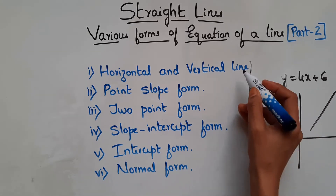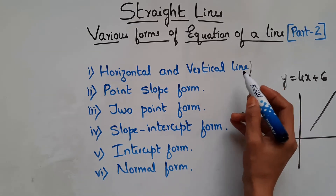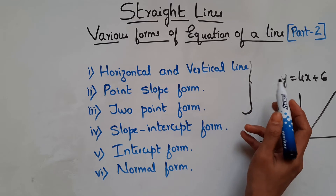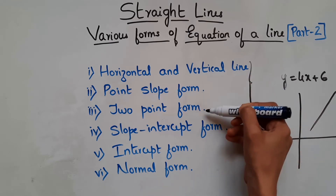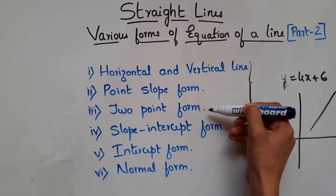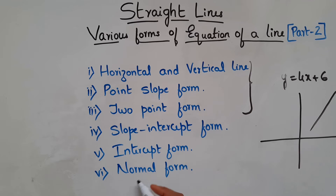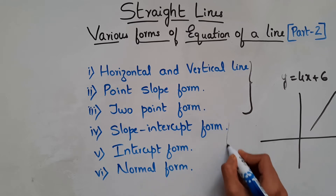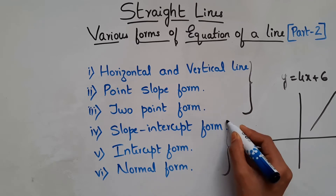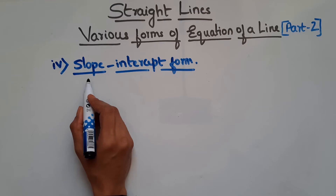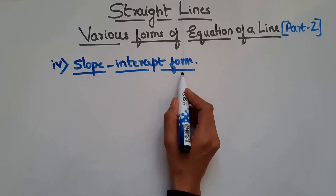We have already seen how to find the equation of a line in 3 different conditions. Today we will see slope-intercept form, intercept form, and normal form — these 3. So now let us see what is slope-intercept form.